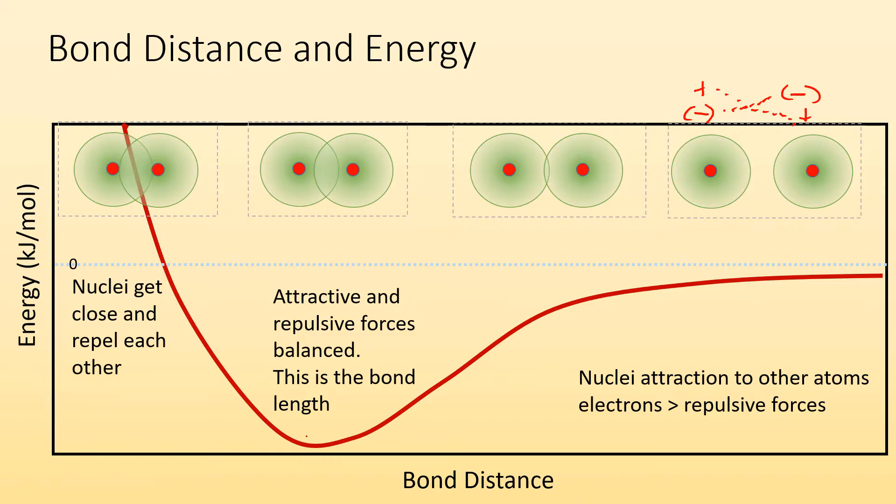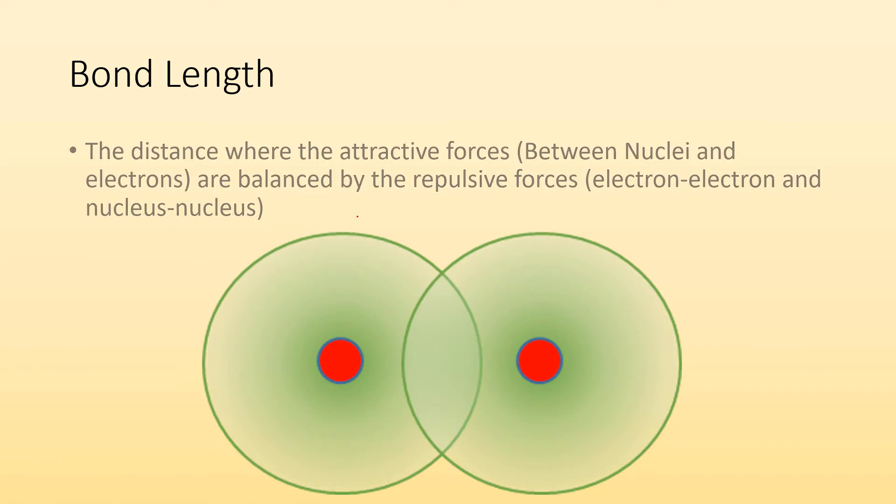So the low point right here is going to be what we call the bond distance. The bond length is the distance where the attractive forces between the nuclei and the electrons are balanced by the repulsive forces between the electron-electron interactions, as well as the nucleus-nucleus interactions. So that low point for energy is like the natural stable state, and we call that the bond length, because that's how you're going to find them.